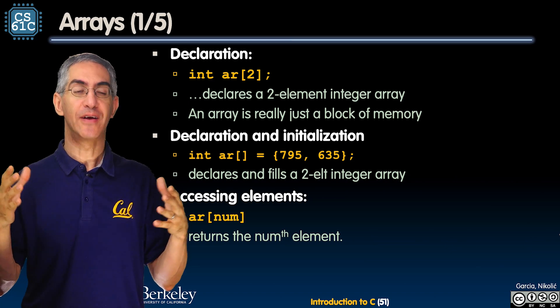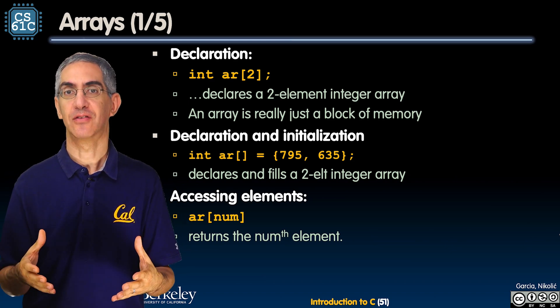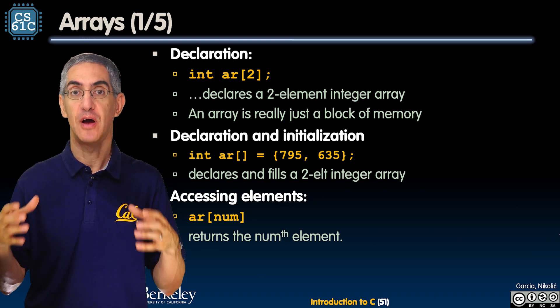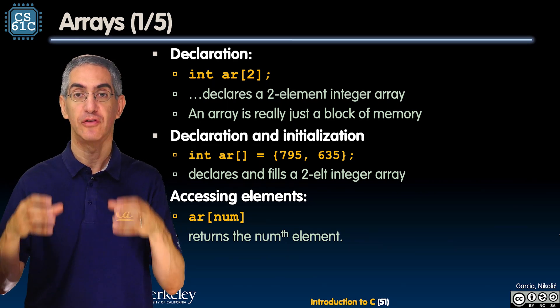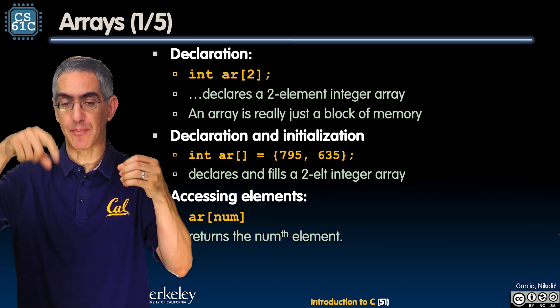So here the first line says int ar[2] - I want two integers side by side. The most important thing you understand about arrays is that it's a way of asking C for a contiguous block of memory. I need to have two integers side by side, not here with a gap in the middle - you have them together.